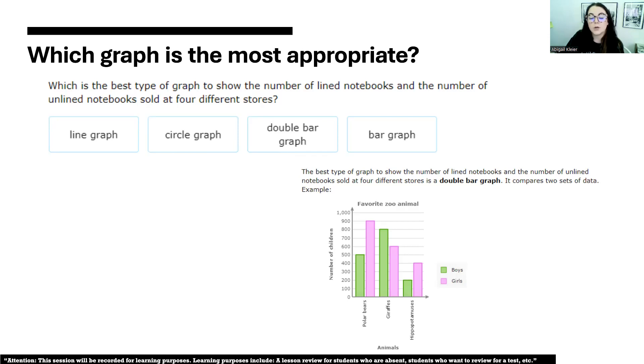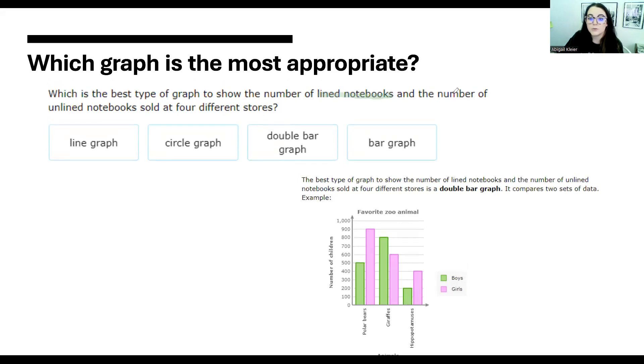Here's a sample question, similar to what we went over in class: which is the best type of graph to show the number of lined notebooks and the number of unlined notebooks sold at four different stores? The first thing that really stands out to me here is they're talking about two different types of notebooks, lined and unlined, and they're also saying it was sold at four different stores.